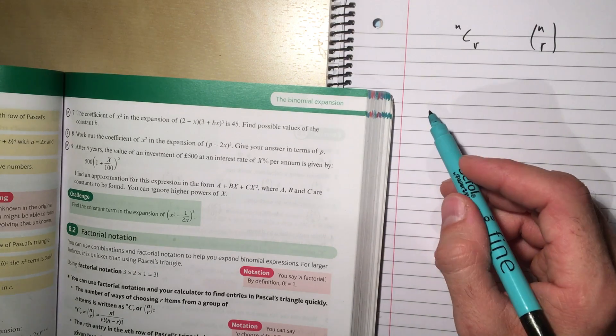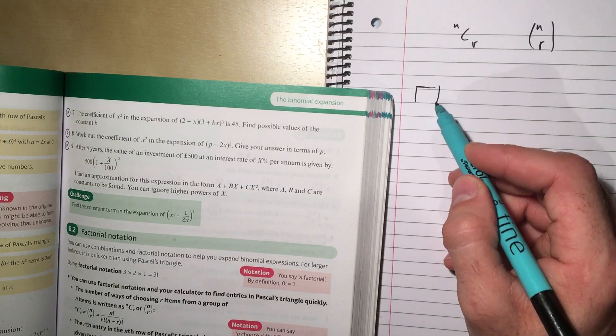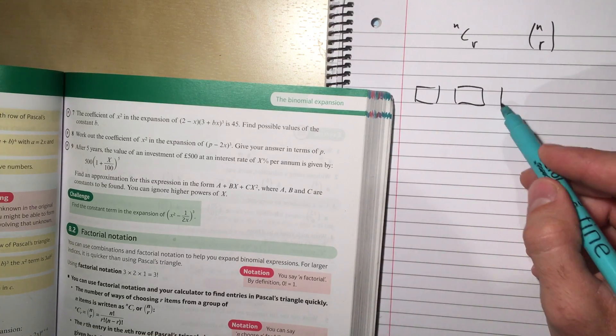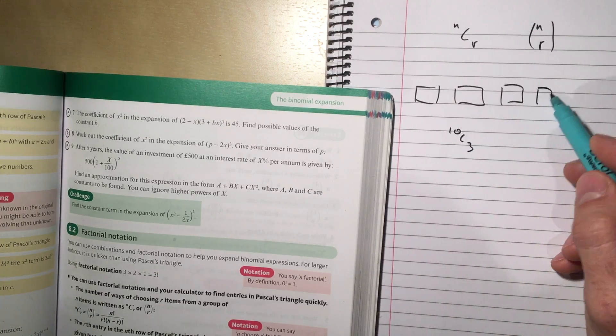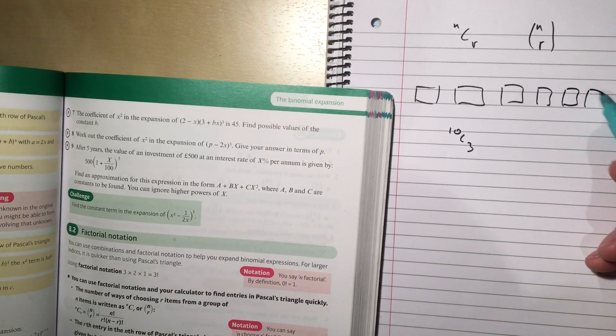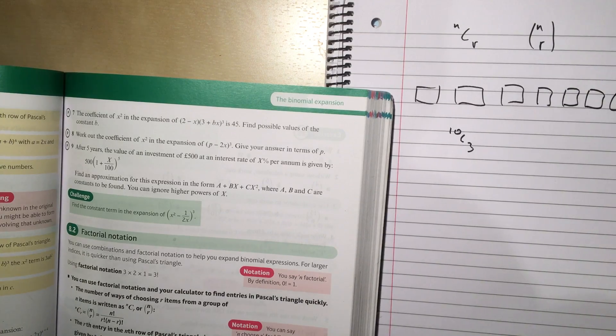And that number is the number where, if you imagine we've got n things in a row, so let's say I was looking at 10 choose 3, I've got 10 things in a row: 5, 6, 7, 8, 9, 10.